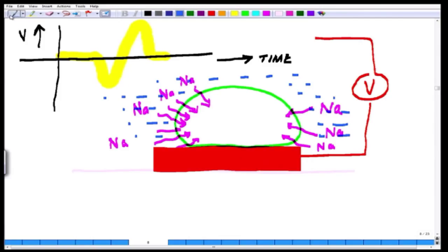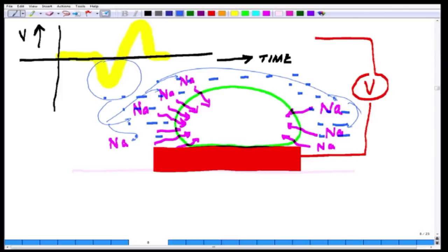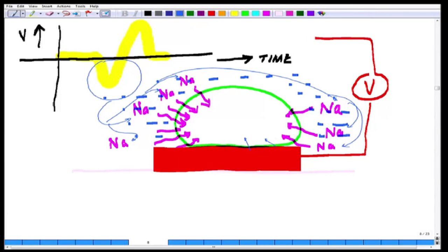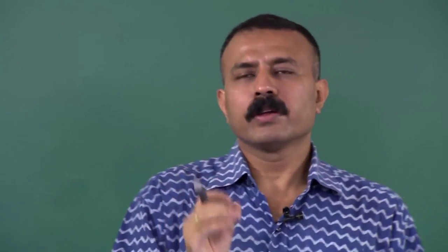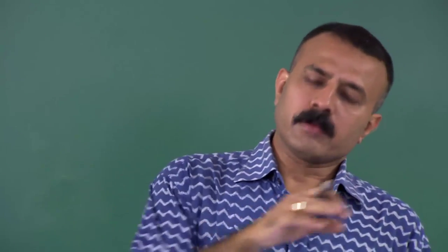The zone where sodium is getting in makes the electrode experience as if locally for a while all the positive charges have moved in. The electrode on top will see a slight negative dip, then ions from the other side will immediately rush in, and the trace will shoot up and come back. This is how you record the extracellular action potential.